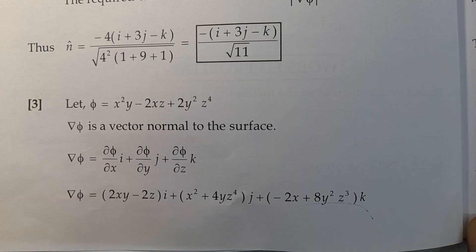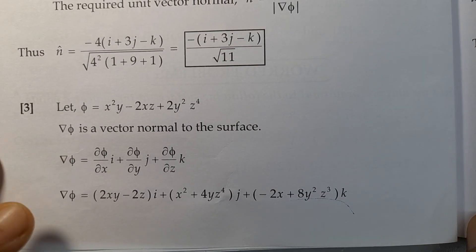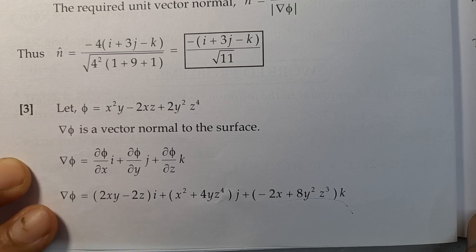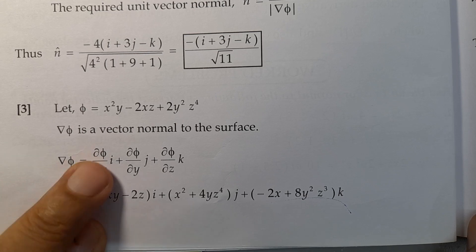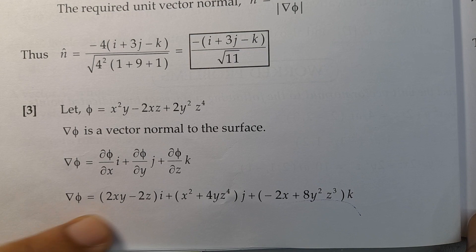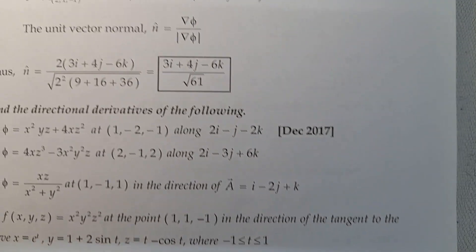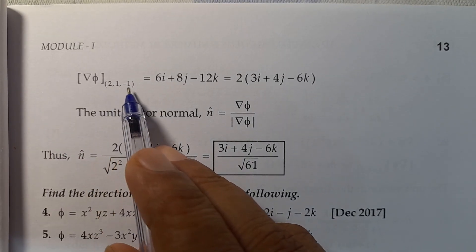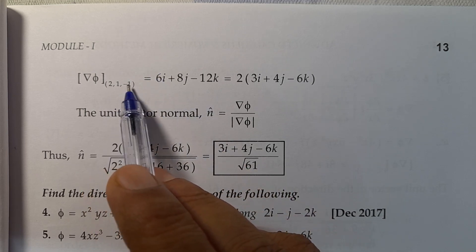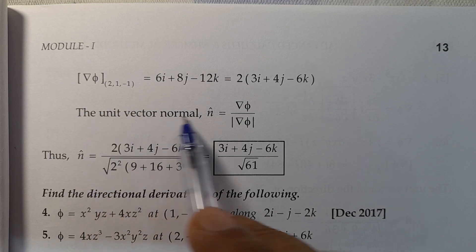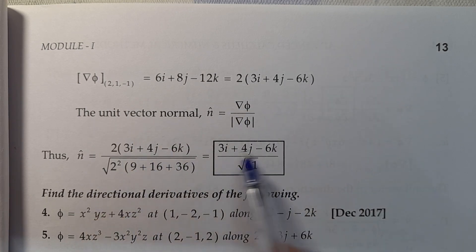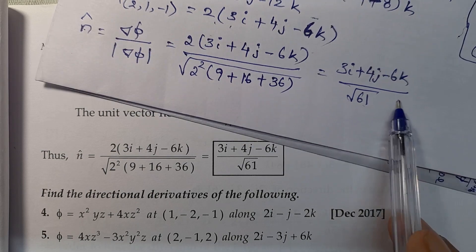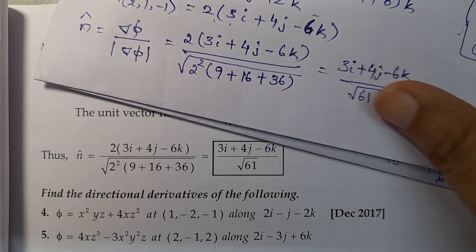So the answer for the third problem is: the unit normal vector equals (3i plus 4j minus 6k) divided by square root of 61. Thank you so much.